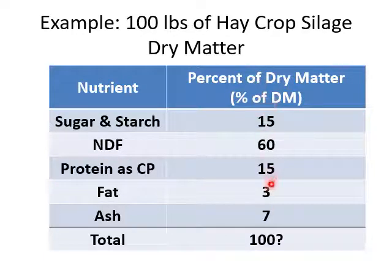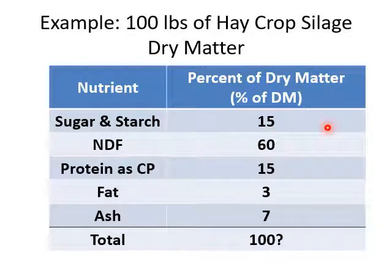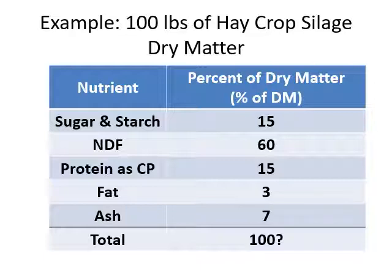In this class, we're going to try to make these five nutrients add up to 100. So if I take 100 pounds of dry matter and multiply by 15%, I get 15 pounds of sugar and starch. 60% times 100 gives me 60 pounds of NDF. Working down: 15 pounds of crude protein, 3 pounds of fat, and 7 pounds of ash. Pretty straightforward.